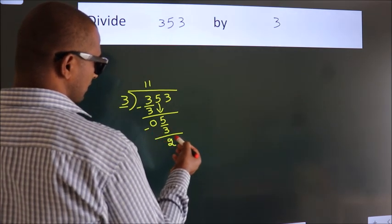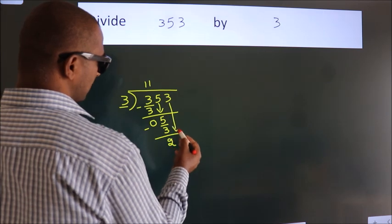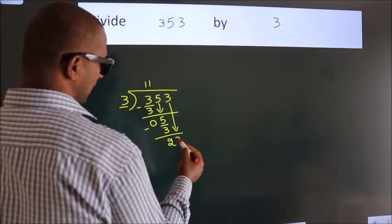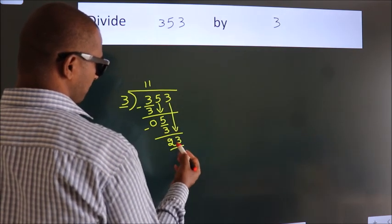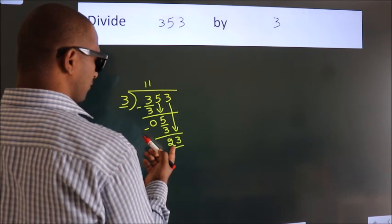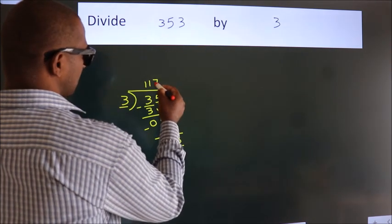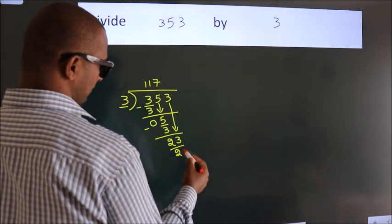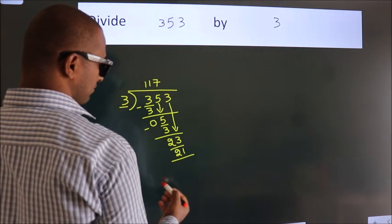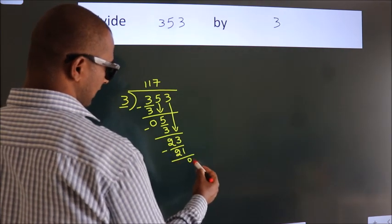After this, bring down the beside number. So 3 down, so 23. A number close to 23 in 3 table is 3 7s, 21. Now, we subtract. We get 2.